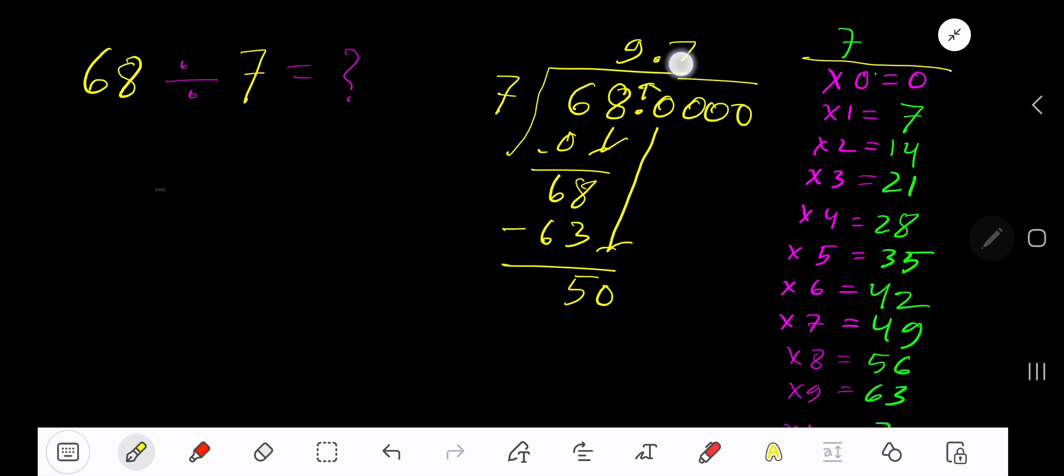Subtract, 1. Bring down another zero. 7 goes into 10 how many times? 2 times is 14. 14 is greater than 10, so one time. 1 times 7 is 7. Subtract, 3.